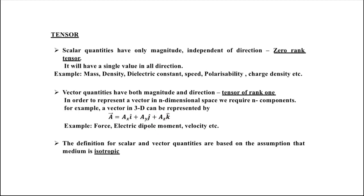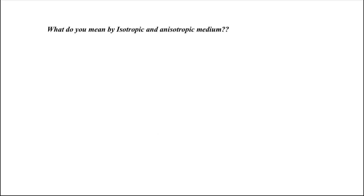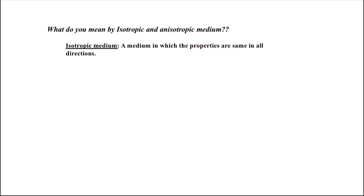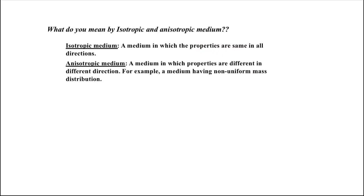What do we mean by isotropic and anisotropic medium? An isotropic medium is one in which the properties are the same in all directions — that is what we call an isotropic medium. For an anisotropic medium, the properties are different in different directions.